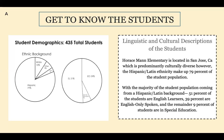Now we're going to get to know the students. As you can see on the screen, we have student demographics. There are 435 total students at the school. We've included an ethnic background pie chart as well as a pie chart to show the learning of the students. We have EL, that makes 51%, that's English learners. Then we have EO, which is English only, and then special education.